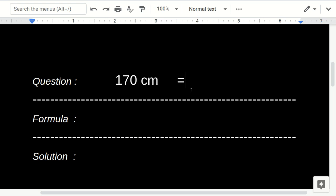Before we solve the problem, we need to know the conversion factor to convert centimeters to feet. One centimeter equals 0.0328084 feet. That's a very long number.